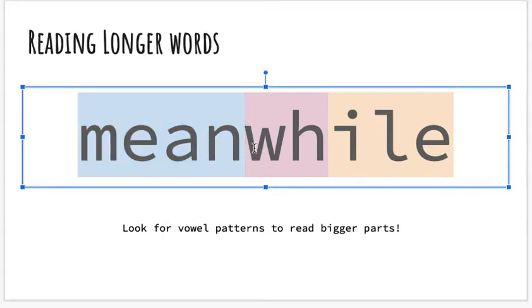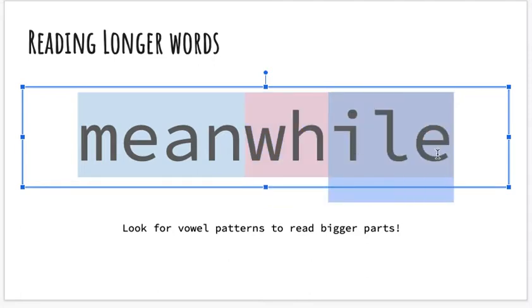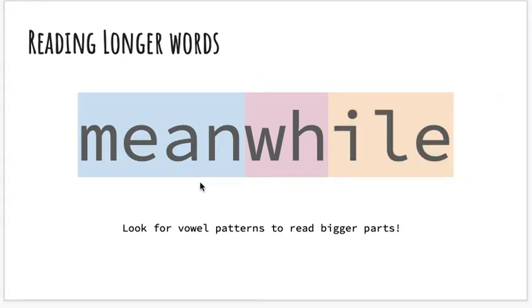Then I see the digraph W-H — your turn. And then I see this vowel pattern: I, consonant, E — 'ile.' The E is silent. I know that because this is a long I. When I put them together: mean, wh, ile — meanwhile. I know the word says 'meanwhile.'